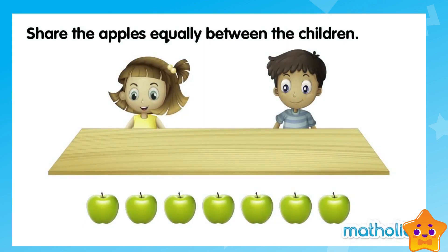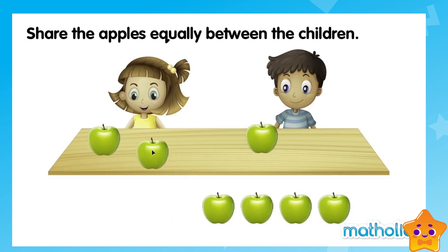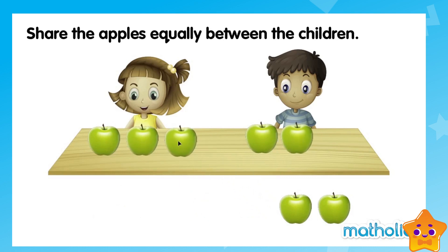Share the apples equally between the children. There are seven apples. The children have an equal number of apples — they each have three apples. There is one apple left. Seven divided by two is equal to three with one remainder.